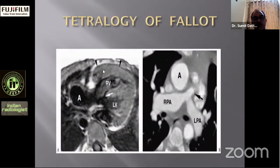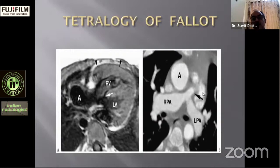Cardiac MRI oblique short-axis view demonstrates right ventricular hypertrophy with the aorta overriding both the right and left ventricular outflow tracts, and a large subaortic VSD is clearly visible. CT angiogram shows classic pulmonary stenosis with post-stenotic dilatation of both the right and left pulmonary arteries.